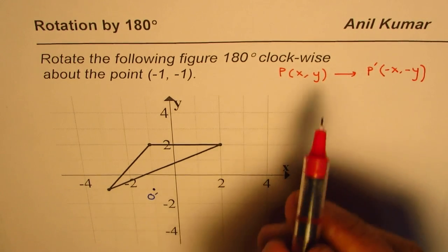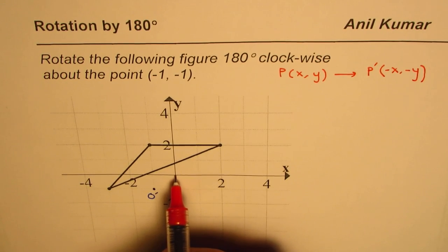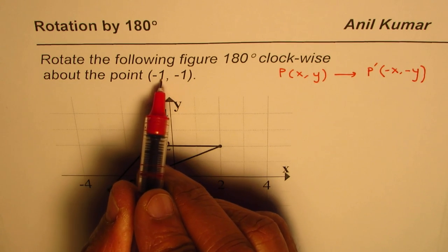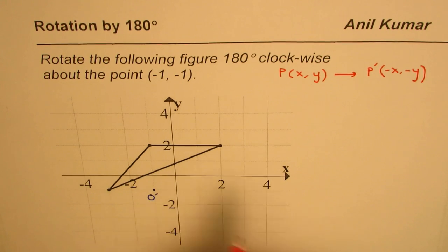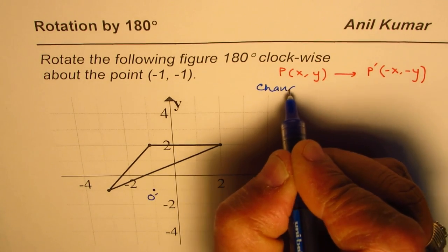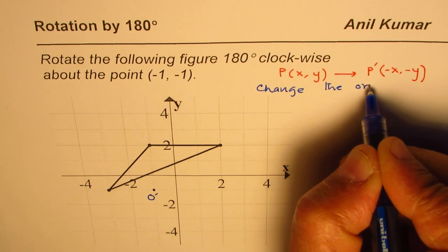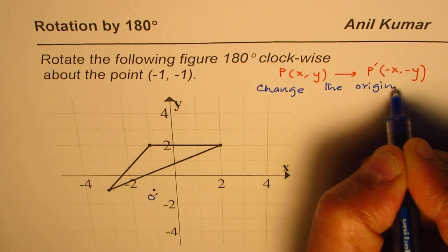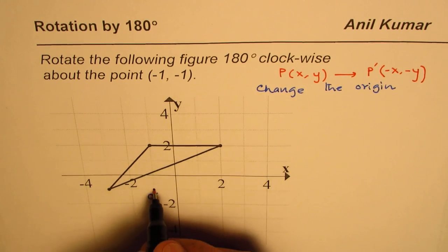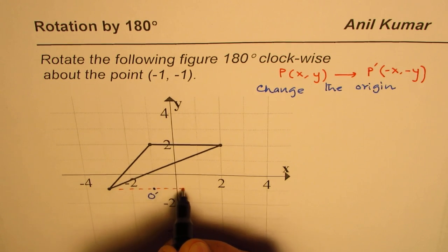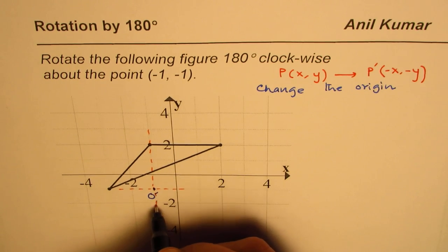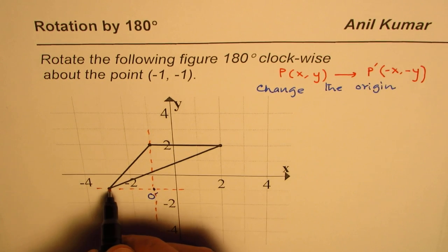We do rotations about the origin by default, but here the rotation is about a different point, (-1, -1). So the strategy is to change the origin. We'll make the origin at the point of interest, so the new origin will be at what was previously (-1, -1). That is what we are trying to do.